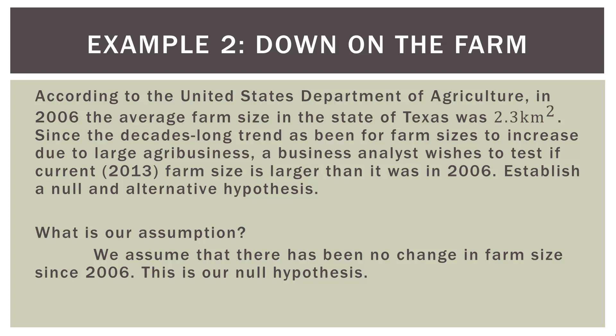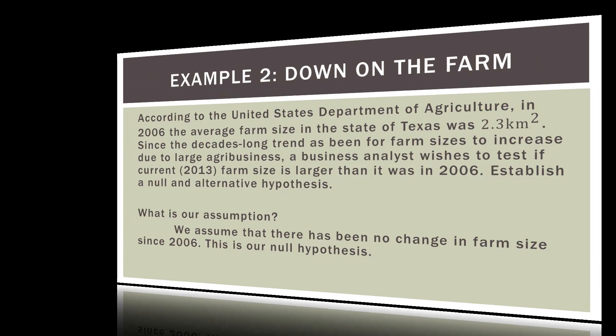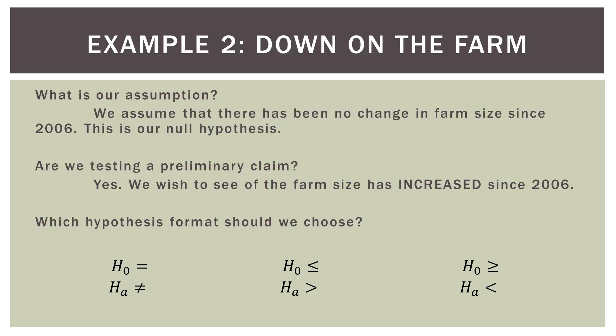The only given information we have is that the average farm size in 2006 was 2.3 square kilometers. That is our assumption, our known, our given — and therefore our null hypothesis. We assume no change in farm size since 2006. We are also testing a preliminary claim: we wish to see if farm size has increased since 2006.